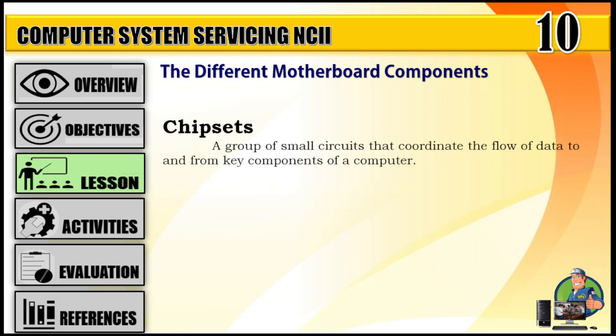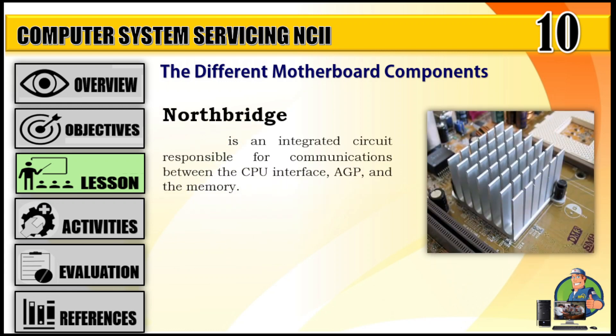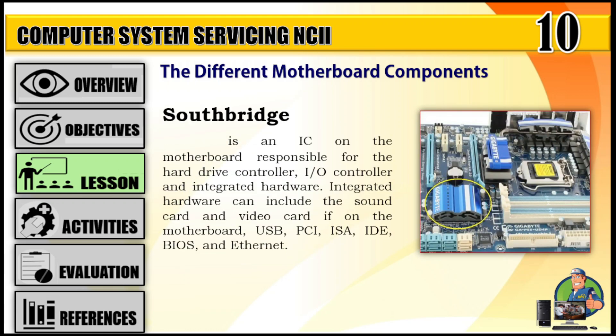Chipsets: a group of small circuits that coordinate the flow of data to and from key components of a computer. Types of chipsets: Northbridge and Southbridge. Northbridge is an integrated circuit responsible for communications between the CPU interface, AGP, and memory. Southbridge is an IC on the motherboard responsible for the hard drive controller, I/O controller, and integrated hardware — which can include the sound card and video card if on the motherboard, USB, PCI, ISA, IDE, BIOS, and Ethernet.